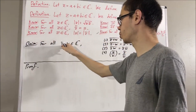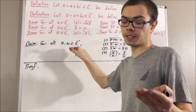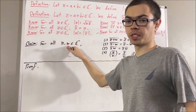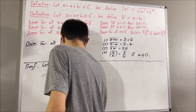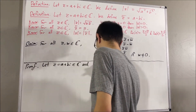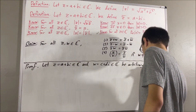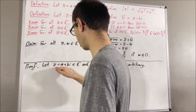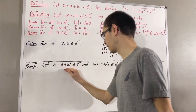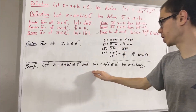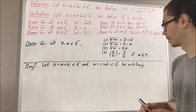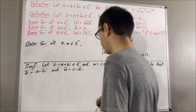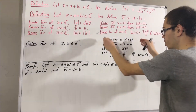Let's start by proving rule one. Let's give ourselves two arbitrary complex numbers z and w. We say z equals a plus bi and w equals c plus di. I'd like to note that z bar equals a minus bi, and w bar equals c minus di.